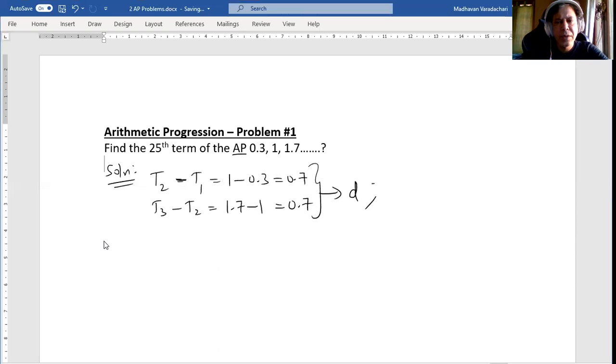We may also note the first term is 0.3, so I will say a is 0.3. In general, if I have to find out tₙ, I need to evaluate a plus (n minus 1) times d. That is the formula.